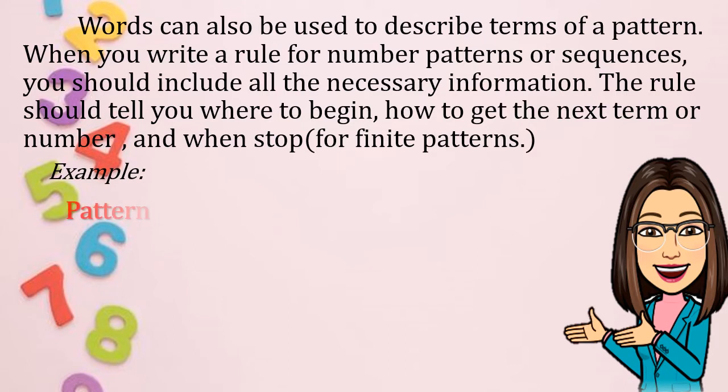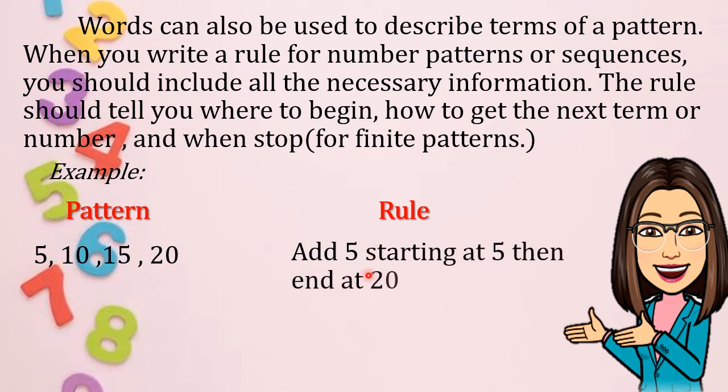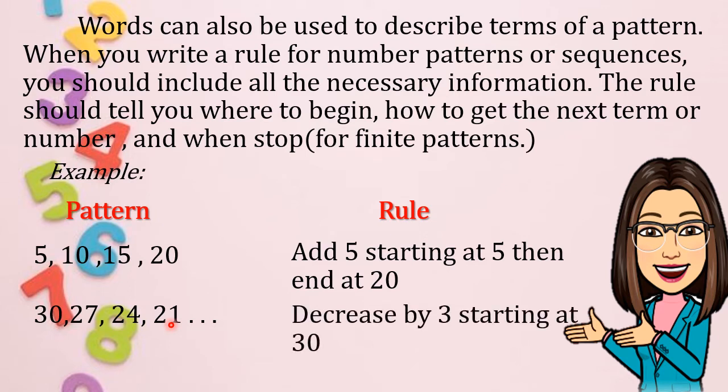Example: the pattern is 5, 10, 15, 20. What is the rule? We have add 5 starting at 5, and then end at 20. Next pattern: 30, 27, 24, 21, dot dot dot. The rule is decrease by 3 starting at 30.